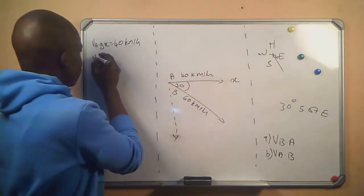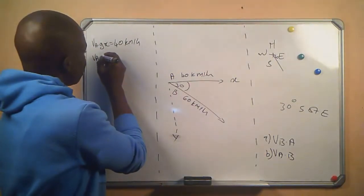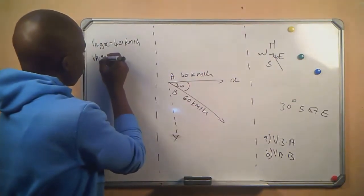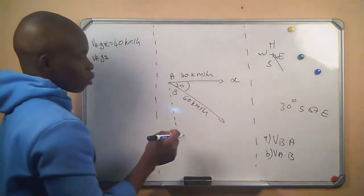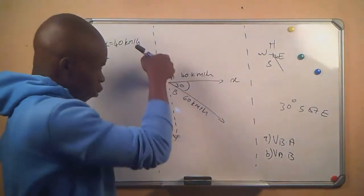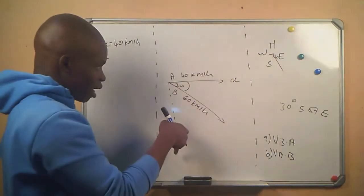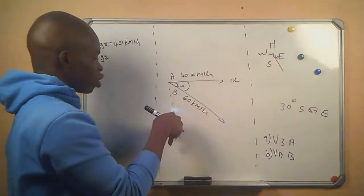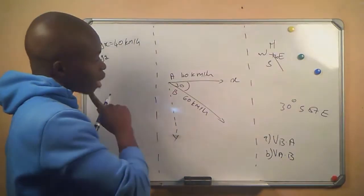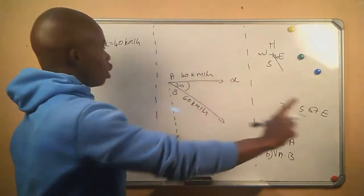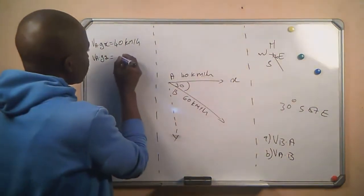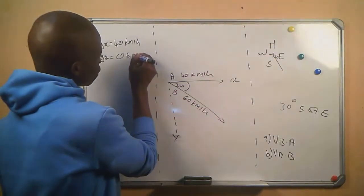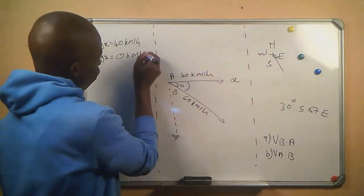And then we want the velocity of car A relative to ground Y. Ground Y is in the vertical direction. Since our car is only moving horizontally, our Y component is 0 kilometers per hour.